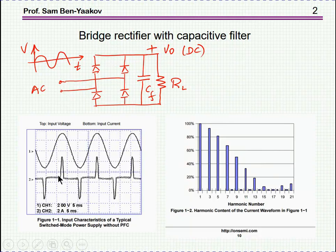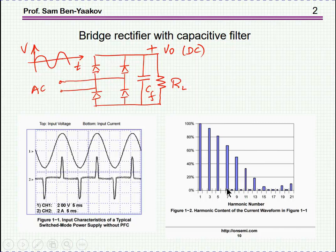Therefore, there's a lot of distortion here, and this is the harmonic composition of this current. As we can see, there are many components of higher frequencies than the main frequency of the line. This is now forbidden in most countries around the world, and in fact, equipment must be designed such that the current will be almost sinusoidal.